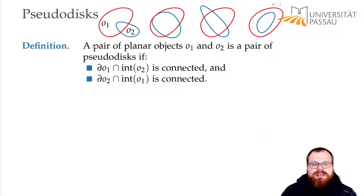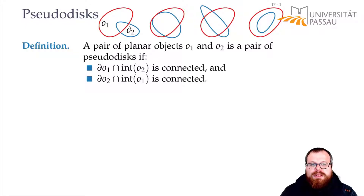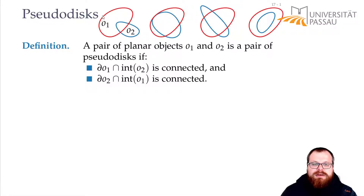Let's look at four examples. In the first one, the boundary of O1 intersected with the interior of O2 is exactly this part here — that is connected. The boundary of O2 intersected with the interior of O1 is this part here — that's also connected. So this is a pair of pseudodisks.